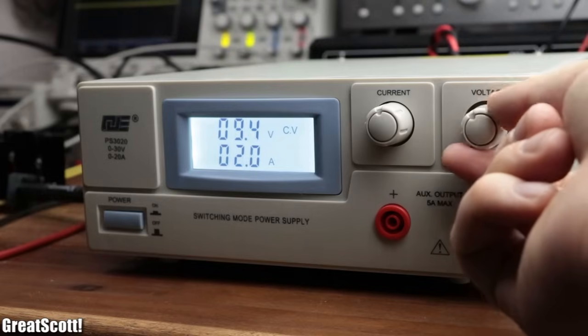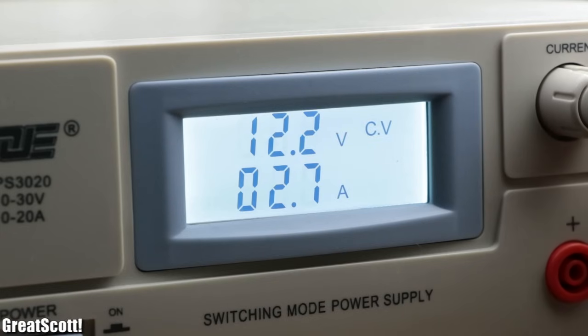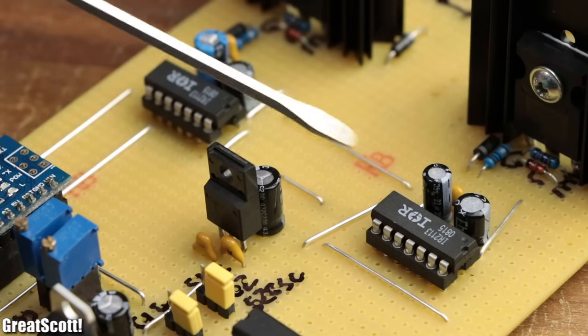Another problem I noticed though while powering the Tesla coil was the rather high current consumption of the system, whose cause were the IGBT drivers themselves.